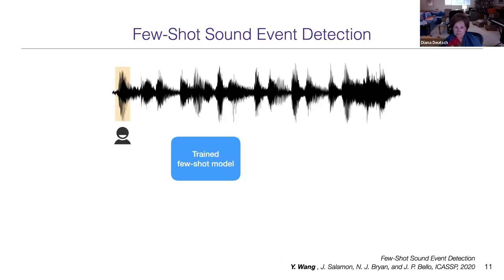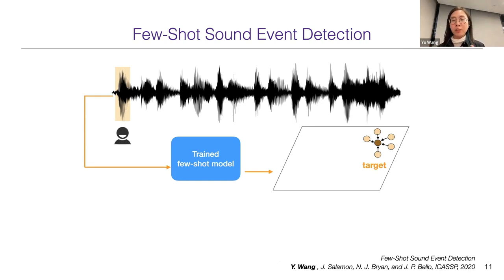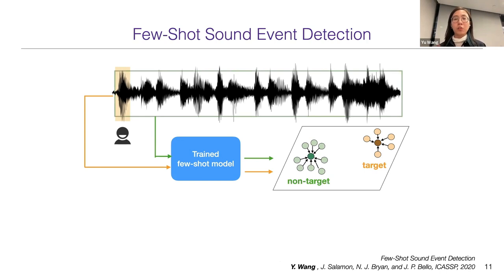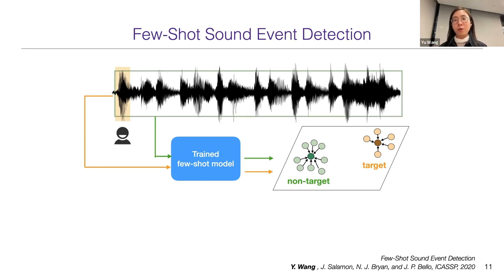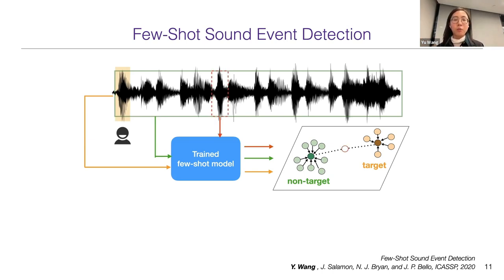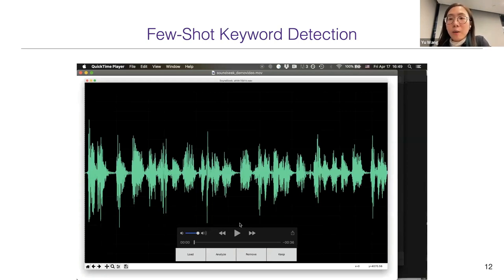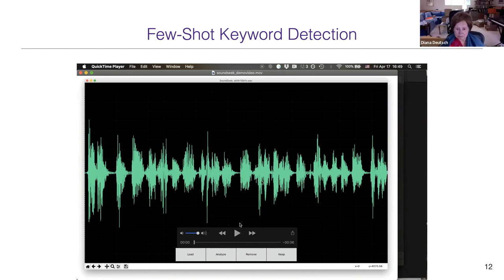We leverage this trained few-shot model and take the user-provided examples to form a target representation in the embedding space. We propose forming a non-target representation by taking the whole track — the assumption being that the target sound is relatively sparse, so on average the track representation should be far from the target sound. Once we have a way to model target and non-target classes, given a frame in the track, we can do nearest neighbor classification to detect whether the target sound is present. I have a short demo of applying this few-shot sound detection system to monophonic speech audio to detect filler words.